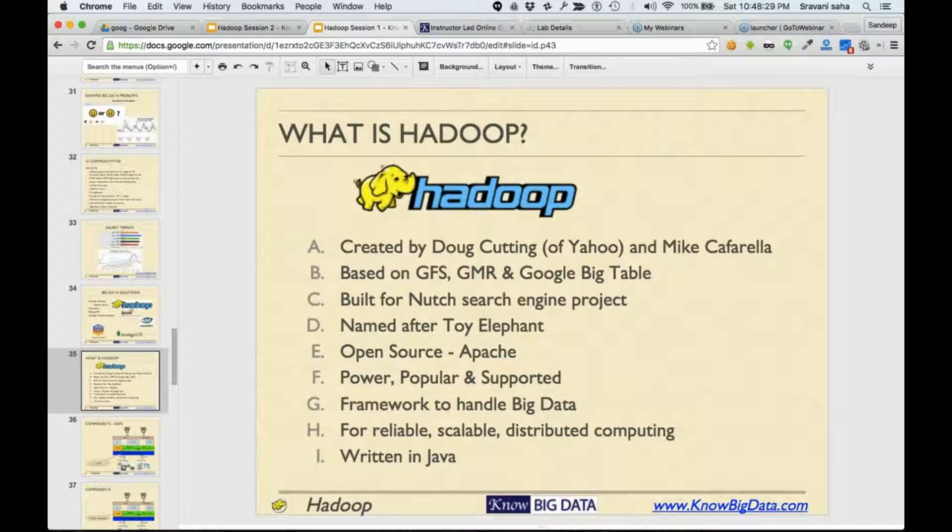Let's understand what we mean by Hadoop. Hadoop is software written based on Google File System, Google MapReduce, and Google BigTable. Google published these three papers—Sanjay Ghemawat and Jeff Dean published these papers. One was called Google File System, the other was called Google MapReduce computation, and the third one was BigTable.